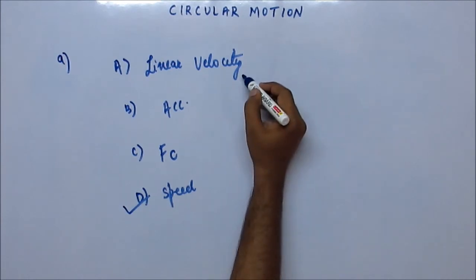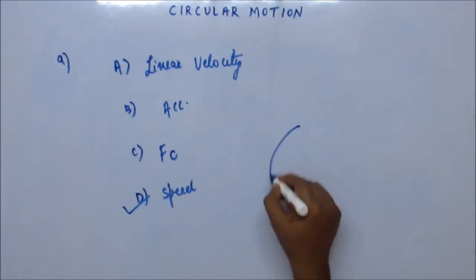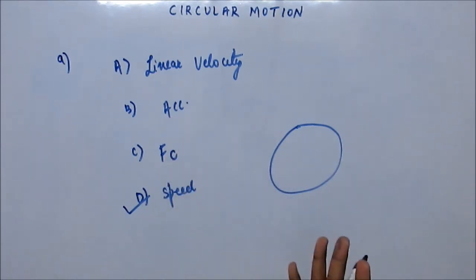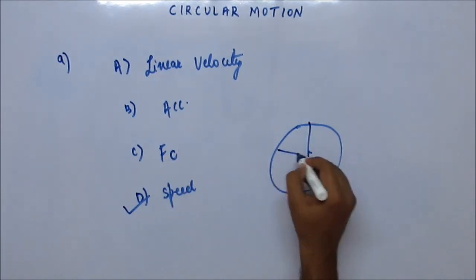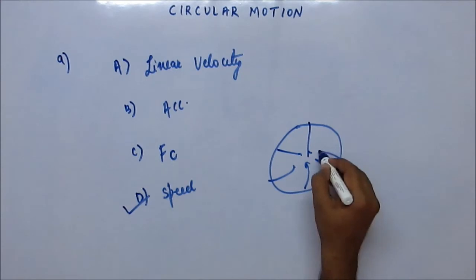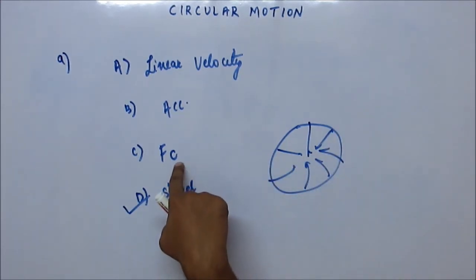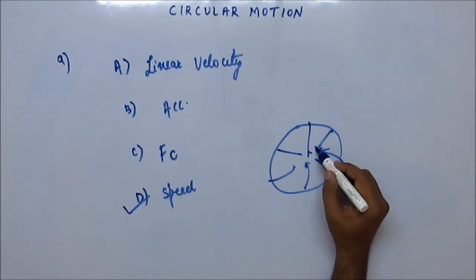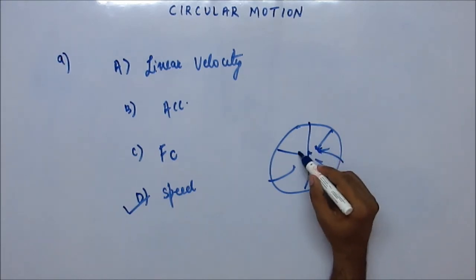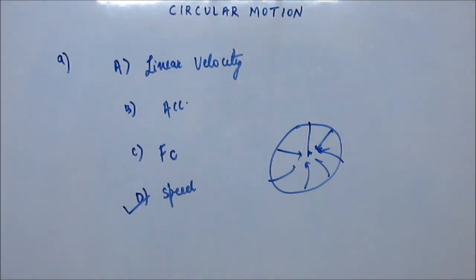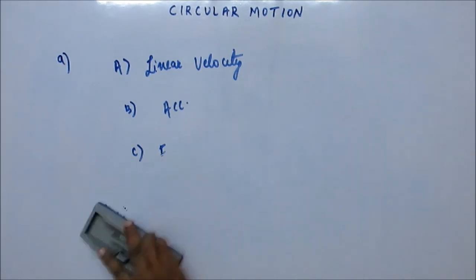Velocity cannot remain constant because in circular motion the direction of velocity keeps on changing. Acceleration cannot remain constant because the centripetal acceleration direction keeps on changing. In uniform circular motion there is no tangential acceleration. Centripetal force is always towards the center, direction keeps on changing, so the force keeps on changing — force is a vector quantity. Speed in uniform circular motion remains constant.